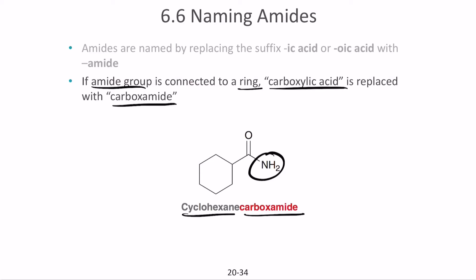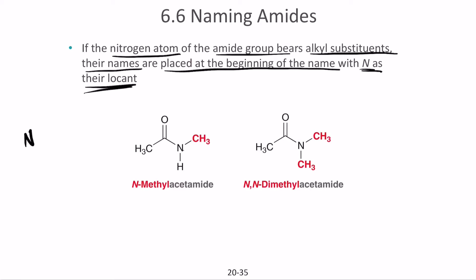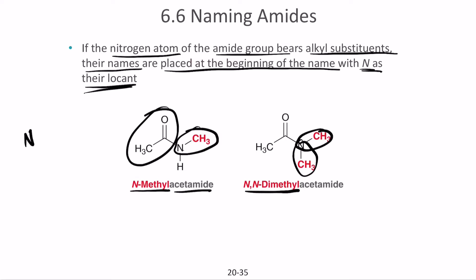If the nitrogen atom of the amide group bears alkyl substituents, we write their names at the beginning of the compound name with 'N-' as the locant. 'N-methyl' means there is a methyl group on the nitrogen. If there are two methyl groups on the nitrogen, we write 'N,N-dimethyl acetamide.' The substituents attached to the nitrogen are named separately from the original compound.